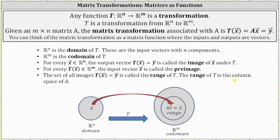The set of all images t of x, or vector y, is called the range of t. The range of t is the column space of matrix A. Looking at the diagram, Rn is the domain, Rm is the codomain, vector x is the input vector, and the output vector is A times vector x, or vector y. Notice how the range may or may not be all of Rm — since the range of t is the column space of matrix A, the range can be a subset of Rm.